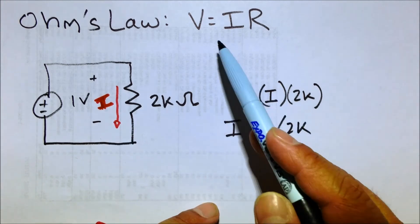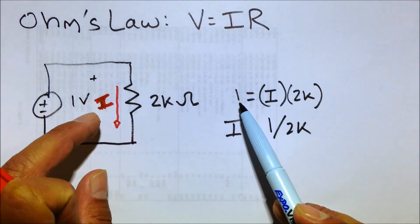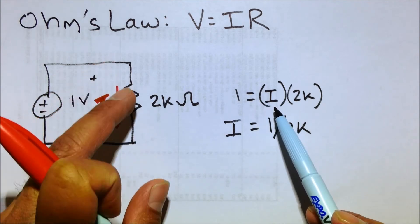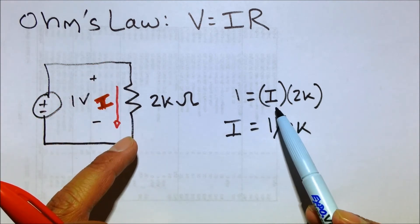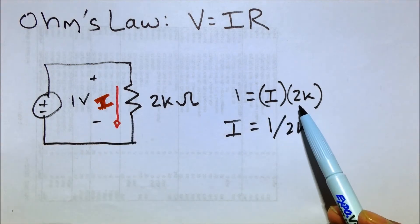Well, let's set up the equation using Ohm's Law. We know that the voltage, in this case, which is 1 volt across that resistor, equals the current running through it, which we don't know yet, so that's going to be our variable, times the resistance, which in our case is 2K.